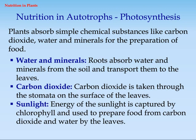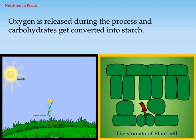Carbon dioxide is taken through the stomata on the surface of the leaves. The energy of sunlight is captured by chlorophyll and used to prepare food from carbon dioxide and water by the leaves. Oxygen is released during the process and carbohydrates get converted into starch.